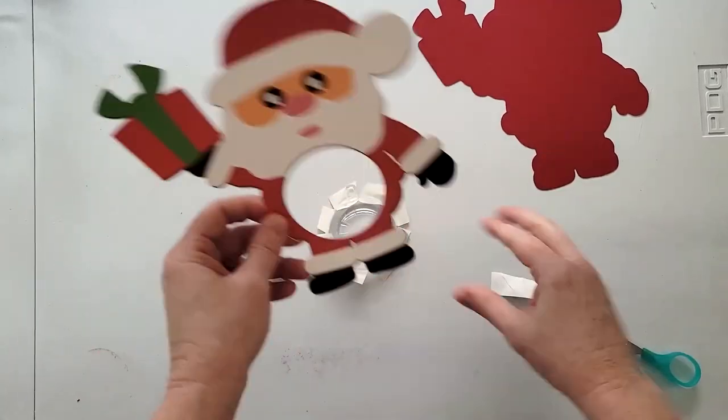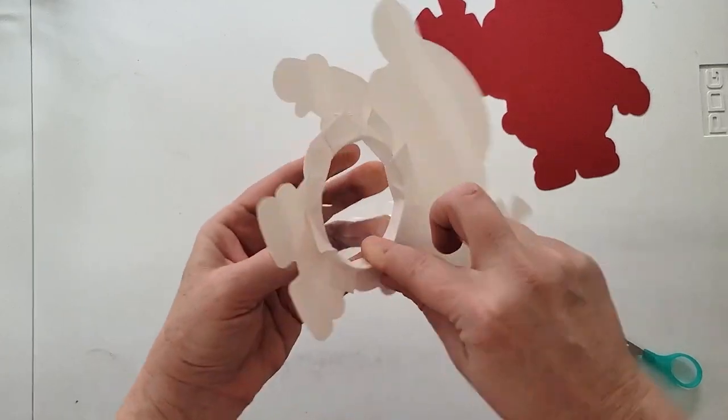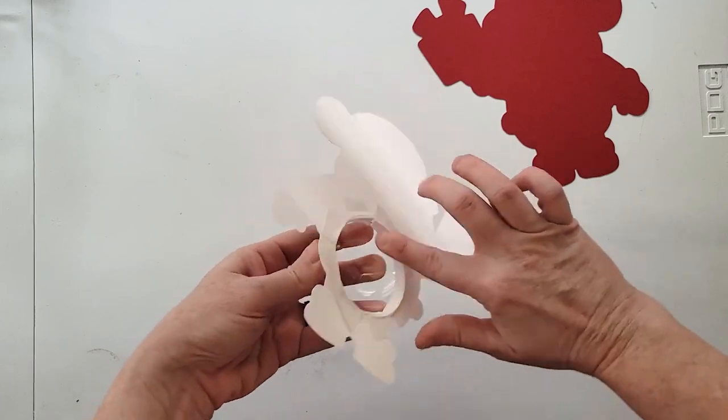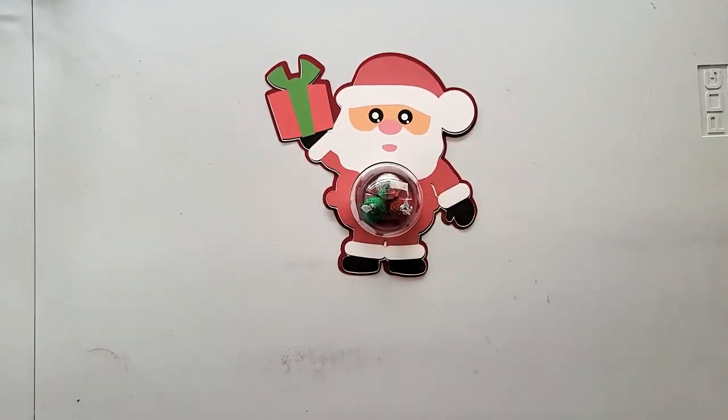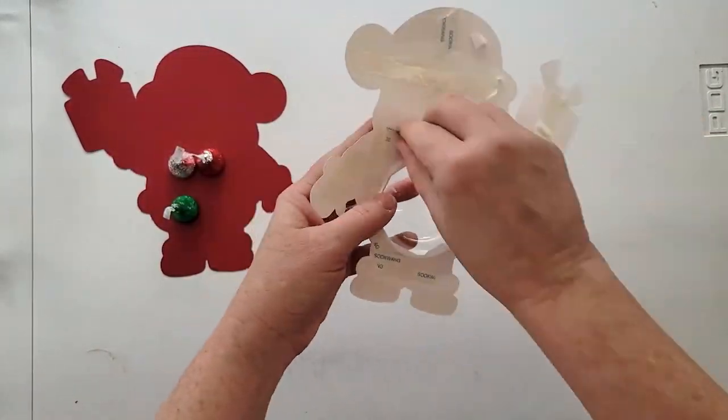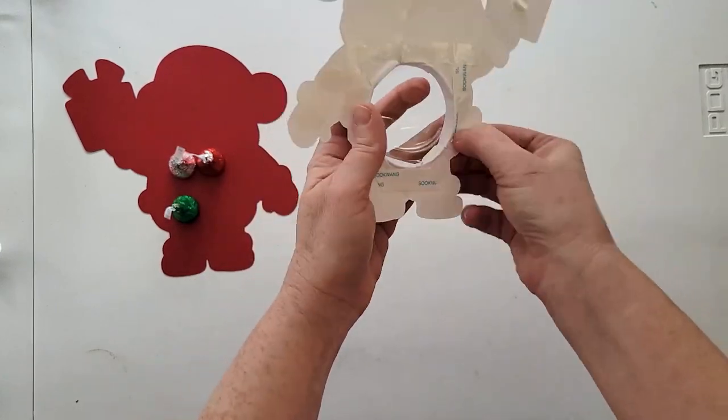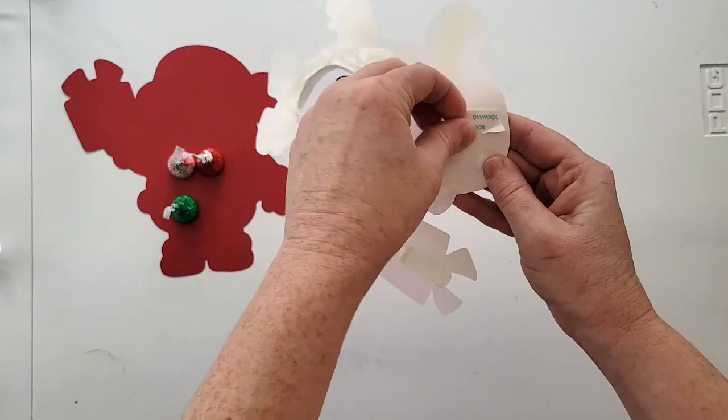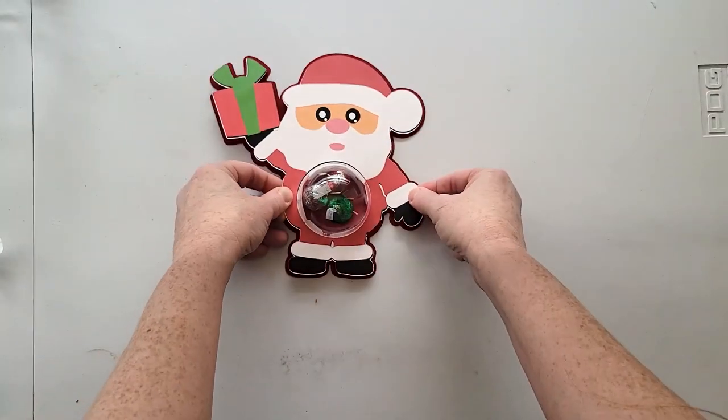Cut slits in it so you can fold it up, then take the printed Santa and press it right over the candy dome. Apply more adhesive to the back of the printed Santa and press that to the colored cardstock offset.